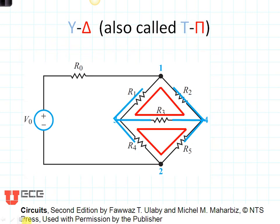You can see the picture right here showing you where the Y and delta parts of the circuit are. A delta circuit is basically a triangle. R1, R2, and R3 form one delta. R4, R3, and R5 form a second delta. The delta part of the circuit is shown in red.